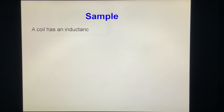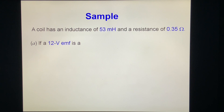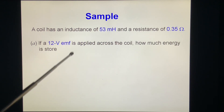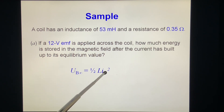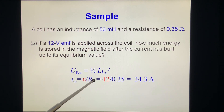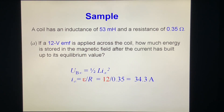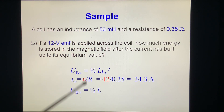Sample problem: a coil has inductance L = 33 mH and resistance R = 0.35 ohm. A 12 volt EMF is applied across the coil. How much energy is stored in the magnetic field after the current has built up to its equilibrium value? The final equilibrium current is I = epsilon/R = 12/0.35 = 34.3 A. The energy stored is U = ½LI² = 31 joules.